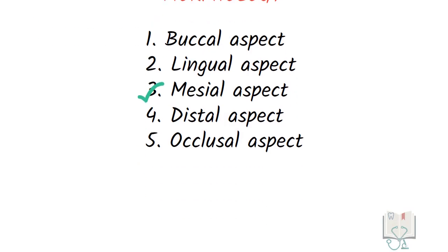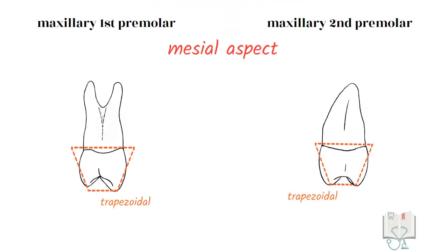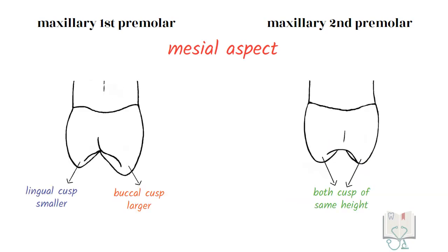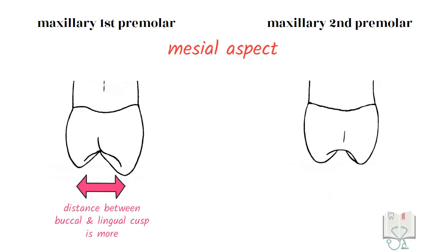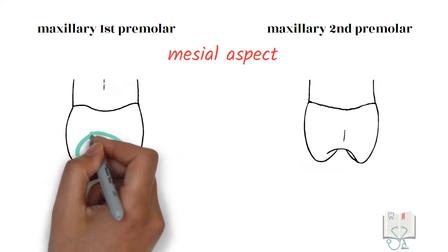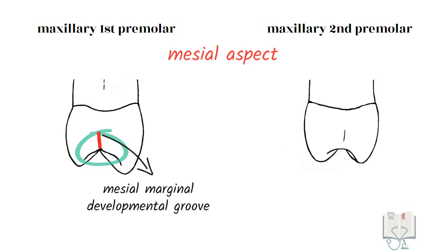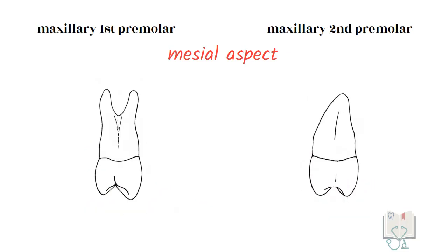Next, the mesial aspect. The crown is trapezoidal in outline form in both premolars. The difference in the height of the lingual cusp is seen from the mesial aspect as well — in the first premolar the lingual cusp is 1 to 2 millimeters shorter than the buccal cusp, whereas in the second premolar they are almost the same height. The occlusal table in the first premolar is larger than in the second premolar, meaning the distance between the buccal and lingual cusps is greater in the first premolar. On the mesial marginal ridge of the first premolar, a mesial marginal developmental groove is present, but no such groove is present on the second premolar.